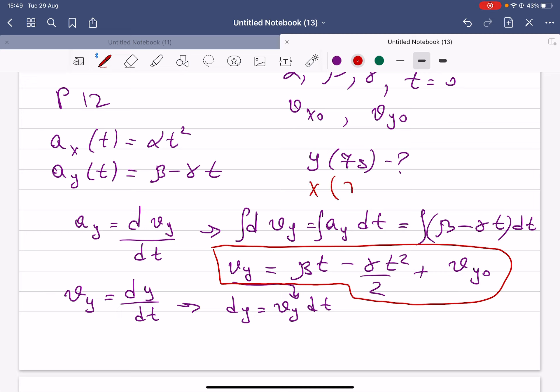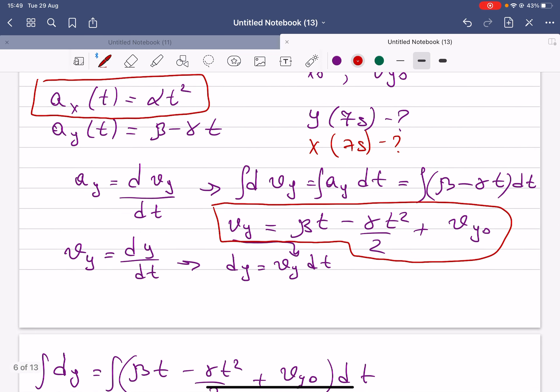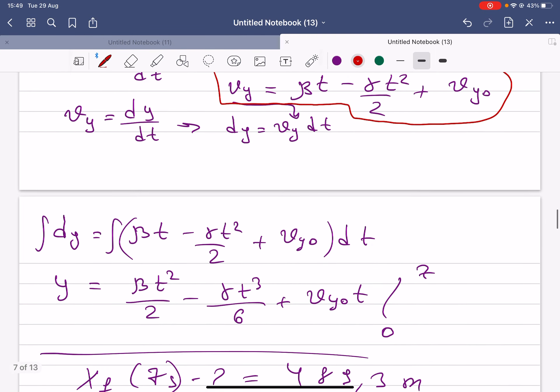Suppose you want to calculate what will be the x at seven seconds. Then you have to look at only the ax components. So you do the same thing which you have done here, but instead of y, you have to use x.